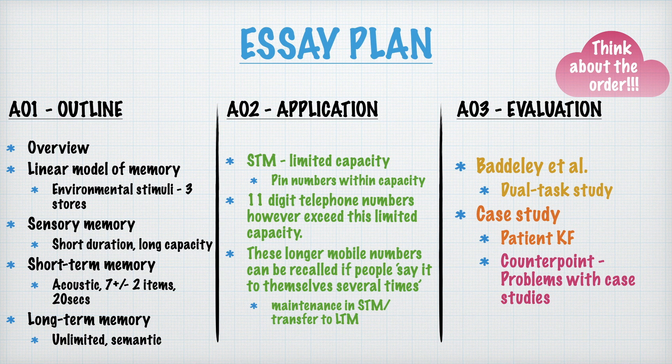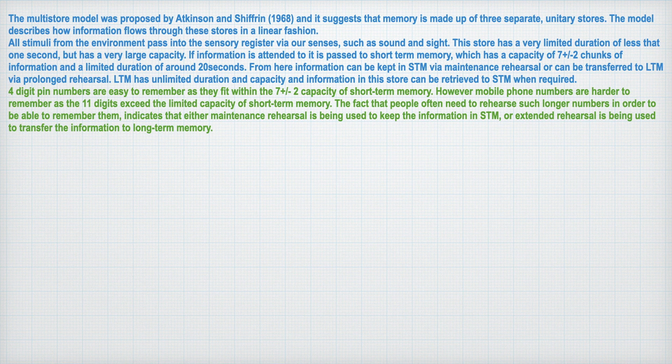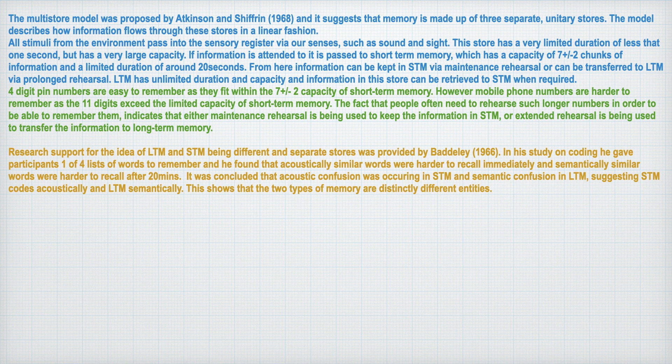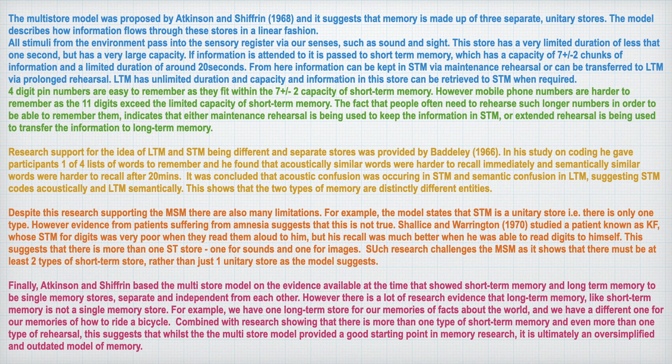Importantly, we've got a lot of information that links to the capacity of short-term memory. Four digits is within the capacity of short-term memory, which is why we can remember PIN numbers quite easily. Whereas 11 digits isn't within the capacity of short-term memory, which means that we need maintenance rehearsal to remember it, or at least to pass it on to long-term memory. That's the kind of thing you're going to be expected to talk about for this essay. And this is what it would look like — there's my outline, then the application section in green, followed by the three evaluation points.